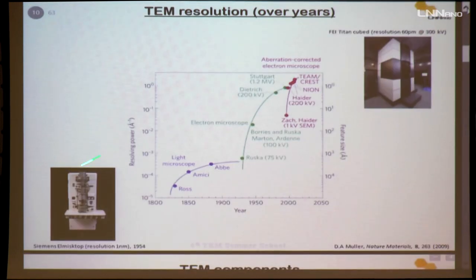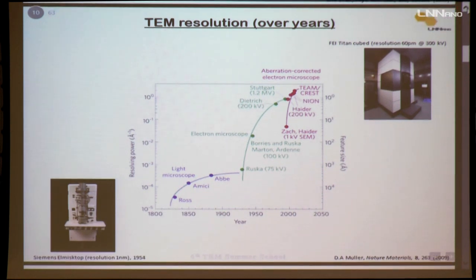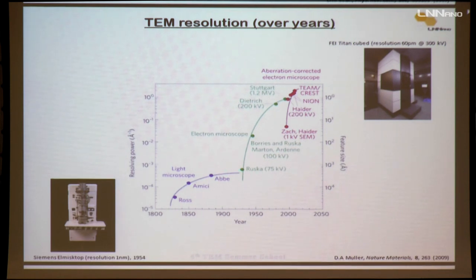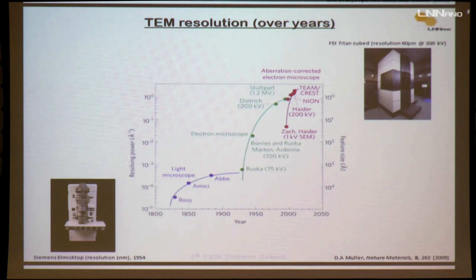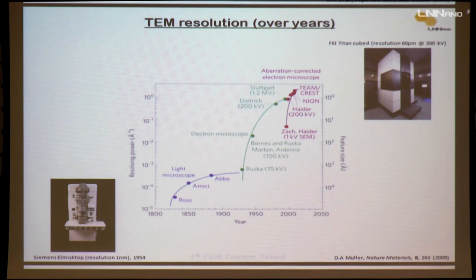This graph shows how resolution has changed over the years. As soon as the TEM was invented, it overcame the resolution of the light microscope and rapidly improved. But for decades, resolution stagnated at 1 angstrom due to aberrations. In the early 1990s, people developed the CS corrector, and now the resolution has improved greatly — 50 picometers is the world's best resolution.